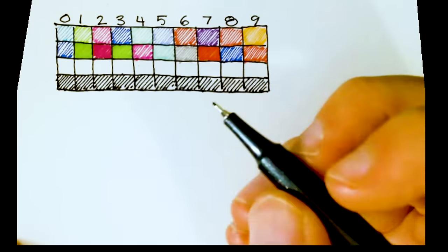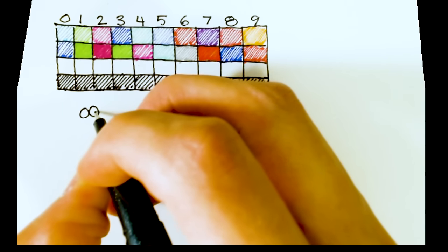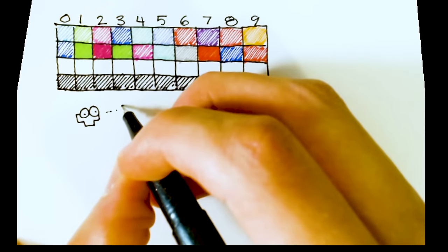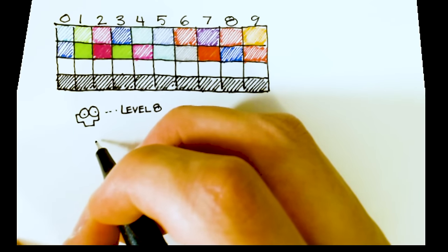The table only has 10 entries, so to account for levels 10 or higher, the game checks whether the level is greater than 10, and if it is, subtracts 10 until it's under 10.